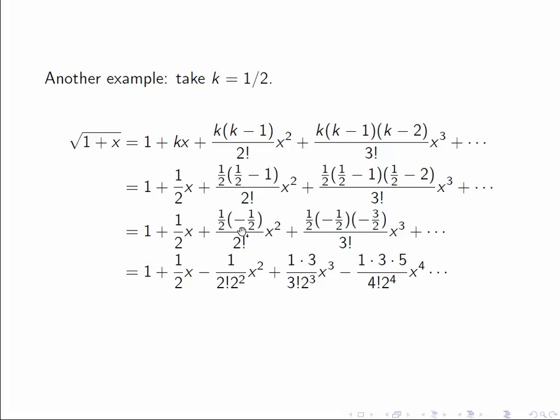Then we think a little bit about what that is to simplify it. The 1/2 minus 1 becomes -1/2. The 1/2 minus 2 becomes -3/2. And then finally we simplify that again. So for instance the x^2 term is going to have 2! on the bottom then 2 times 2 which is 2^2 and we have a negative sign. For the next coefficient we have to multiply by -3/2. So that changes the minus to a plus, adds in a 3 on the top and a 2 on the bottom, and the 2! changes to 3!.